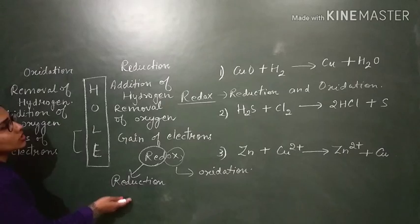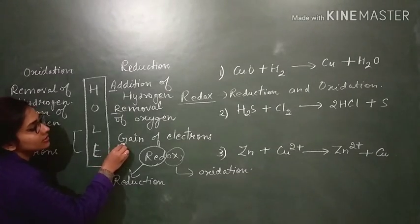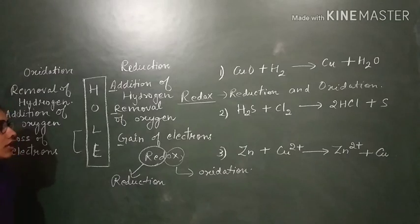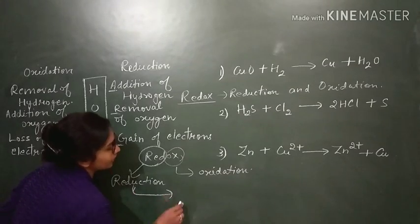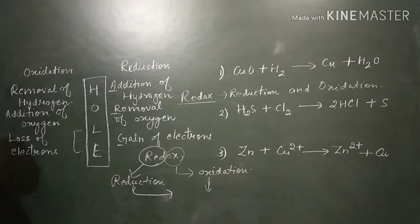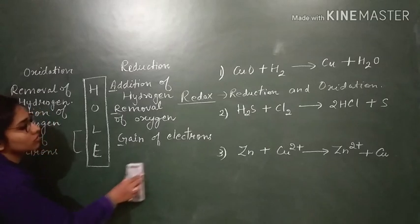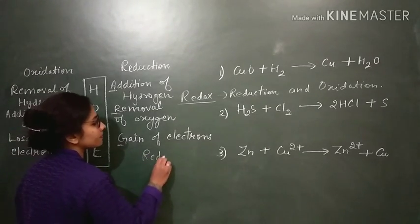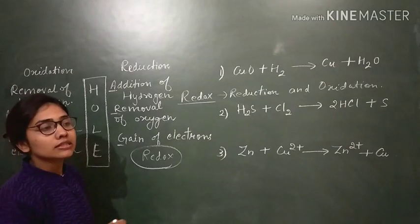Reduction is the reaction in which addition of hydrogen takes place, or removal of oxygen takes place, or there is gaining of electrons — that kind of reaction is called reduction. In the same way, oxidation is the opposite of reduction. In oxidation, removal of hydrogen takes place, or addition of oxygen takes place, or there is loss of electrons. Redox reaction is the term given to the reaction in which reduction and oxidation are taking place simultaneously.